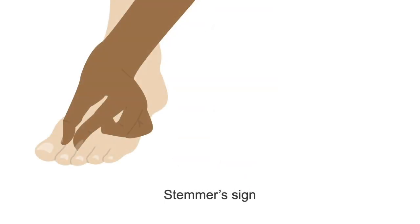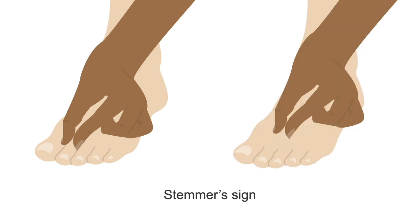To assess for lymphedema, we can test for Stemmer's sign. In this maneuver, you pinch the skin overlying the second metatarsal. Some experts will also pinch the skin over the dorsum of the foot, immediately proximal to the second metatarsal instead. If the examiner cannot successfully pinch the skin, then that would be a positive Stemmer's sign.